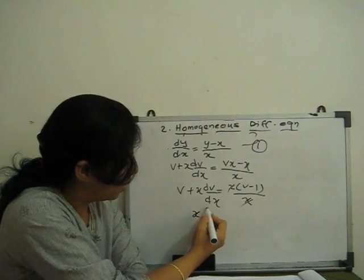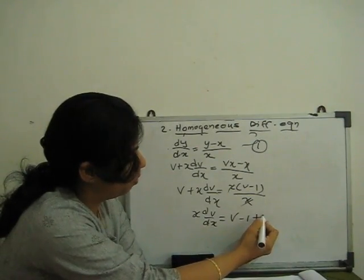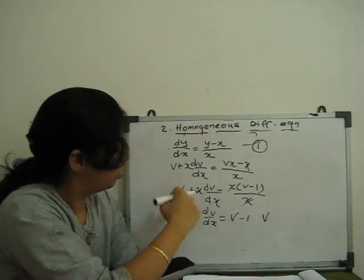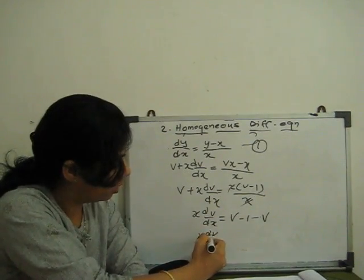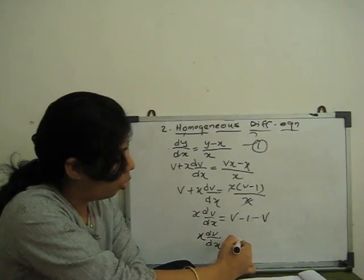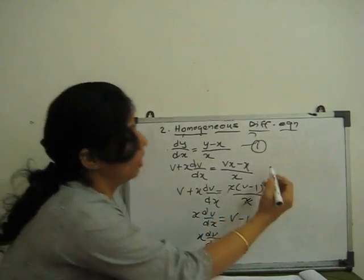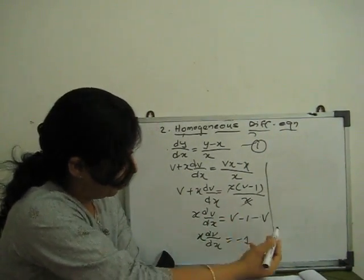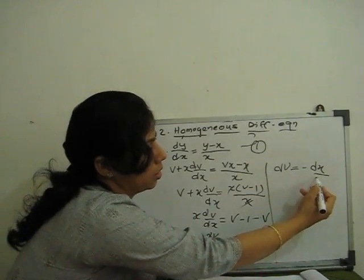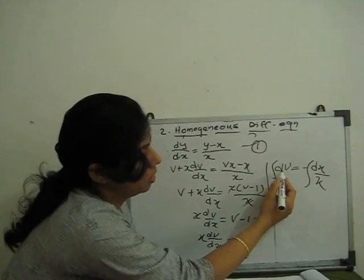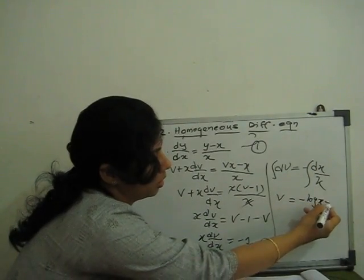We take LCM: x dv/dx equals v minus 1, and then plus v cancels with minus v, so x dv/dx equals minus v — only the constant term remains. Now it's very simple to solve. We separate variables: dv/v equals minus dx/x. Integrating both sides, we get log v equals minus log x plus c, the constant of integration.